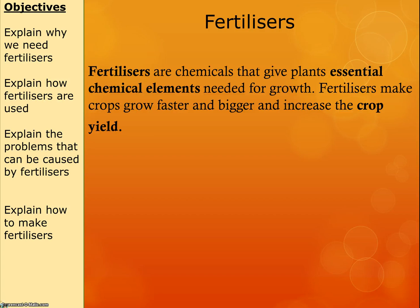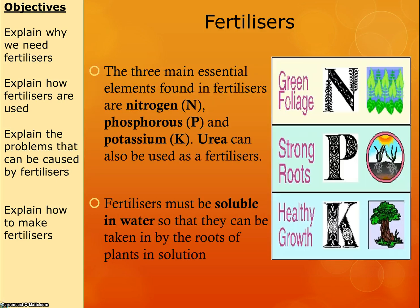Hopefully you're remembering one of the recent videos where I mentioned something very important for making fertilisers — that's ammonia! The three main essential elements we want in our fertilisers are nitrogen, phosphorus, and potassium — N, P, and K are their chemical symbols.